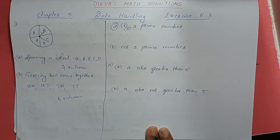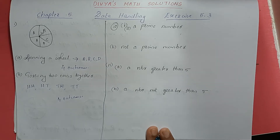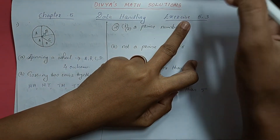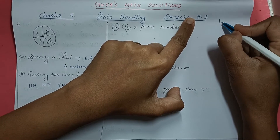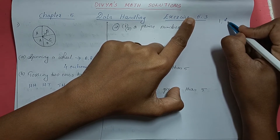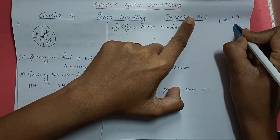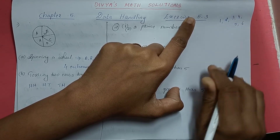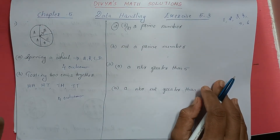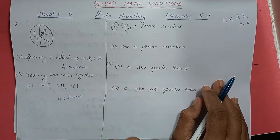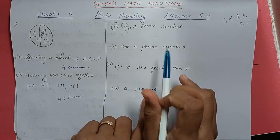Question number 2: When a die is thrown, list the outcomes of an event of getting. A die — like the one used in snake and ladder — has numbers. When we throw a die, we can get either 1, 2, 3, 4, 5, or 6. The first event is getting a prime number. A number which has only that number and 1 as factors is called a prime number.